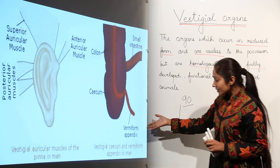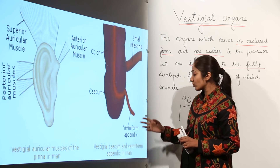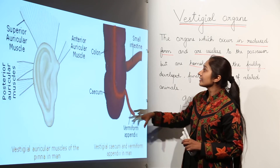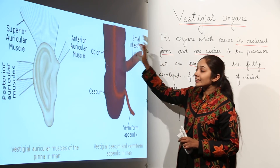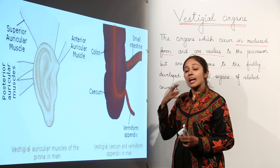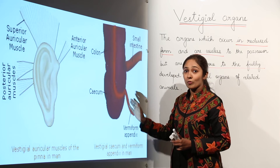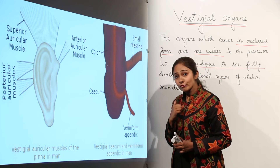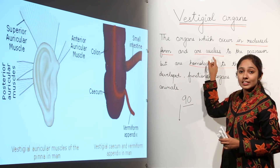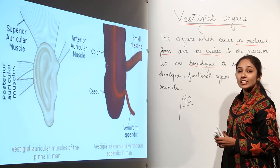We call the appendix the vermiform appendix. It is a tube-like structure connecting the large intestine and the small intestine. Since it helped in the digestion of cellulose and we no longer eat raw food, this structure is again useless and needs to be removed if it causes trouble. It is an example of a vestigial organ.